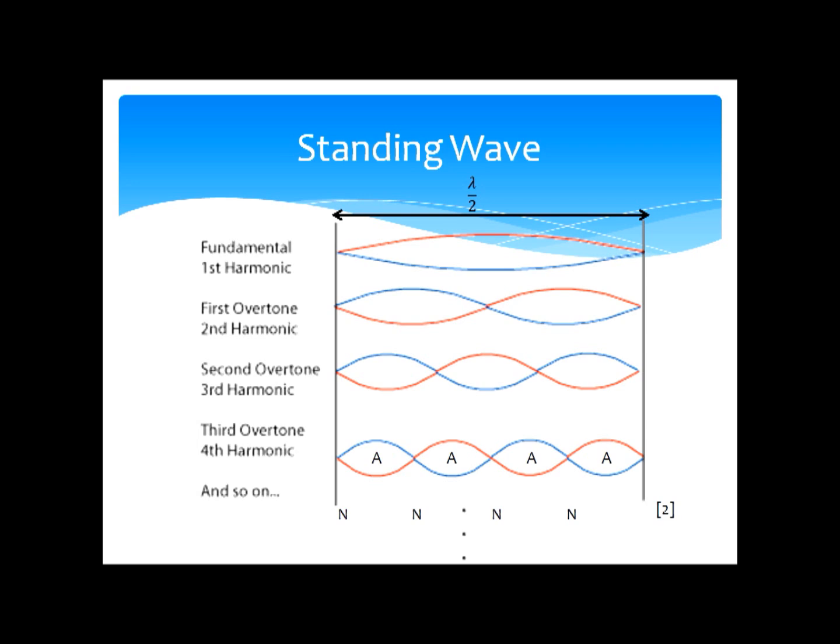If you were to pinch the middle, you can create the second harmonic by plucking the string again. However, by pinching the middle, this forces a node, much similar to the way the interference forced a node. And so now, the length between the two fixed ends is one wavelength. And you get two anti-nodes and nodes.